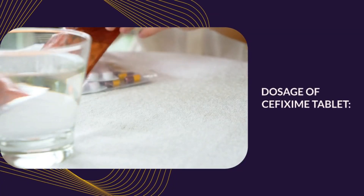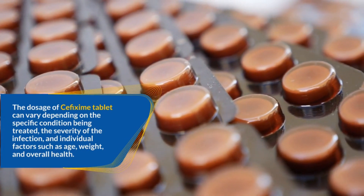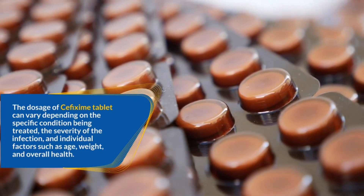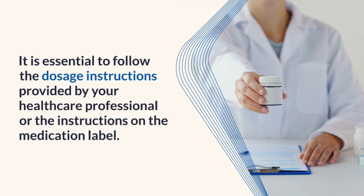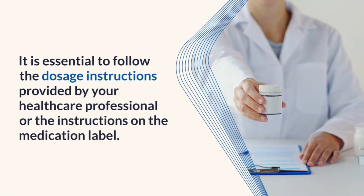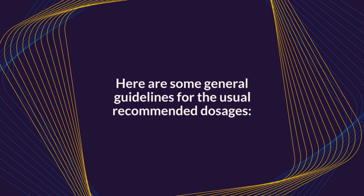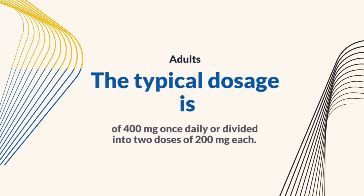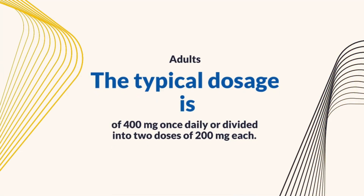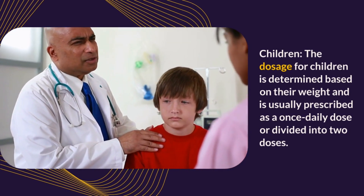Dosage of Suffixime tablet. The dosage of Suffixime tablet can vary depending on the specific condition being treated, the severity of the infection, and individual factors such as age, weight, and overall health. It is essential to follow the dosage instructions provided by your healthcare professional or the instructions on the medication label. For respiratory tract infections, urinary tract infections, and middle ear infections, the typical dosage for adults is 400 mg once daily or divided into two doses of 200 mg each. The dosage for children is determined based on their weight and is usually prescribed as a once daily dose or divided into two doses.